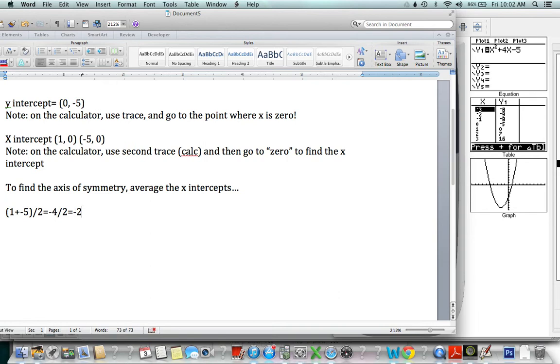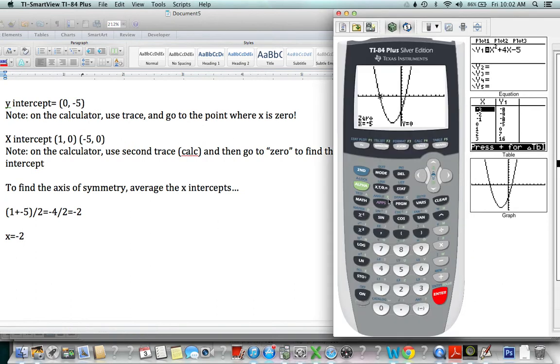So we have one as one of the x-intercepts and we have negative five as the other. So we're doing one plus negative five all over two should give us the axis of symmetry. That is negative four over two, which is negative two. Well, you know what? That required some work on our part. But anyway, the axis of symmetry is x equals negative two. There's actually a quicker way to do it using the TI-84. So let's go over that right now.